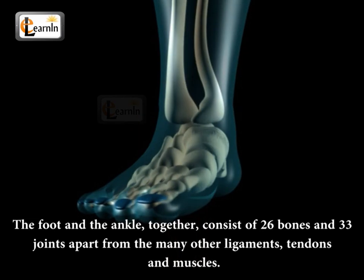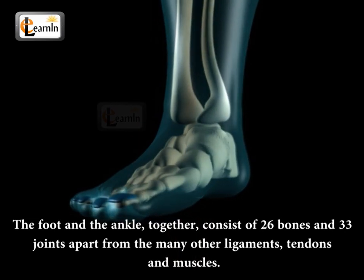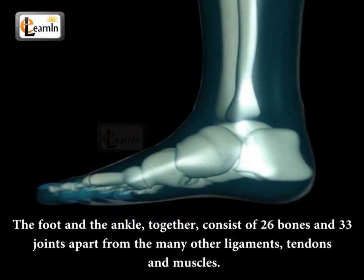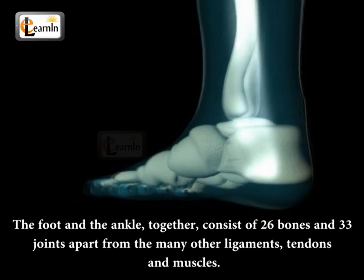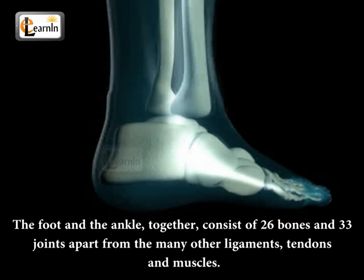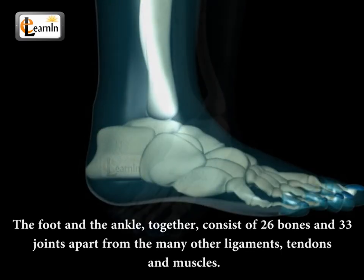The foot and the ankle together consist of 26 bones and 33 joints, apart from the many other ligaments, tendons, and muscles.